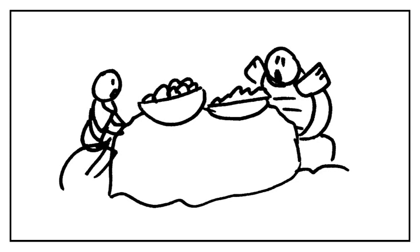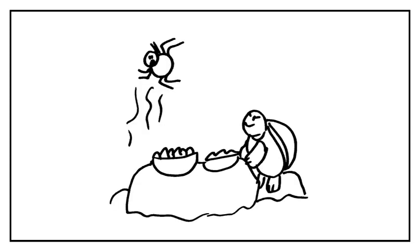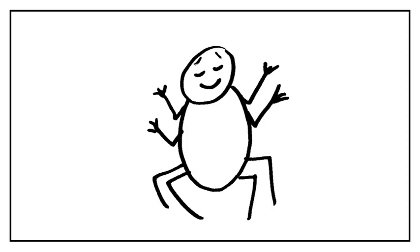Turtle reminded Anansi that it was bad manners to wear a jacket at the dinner table. Not wanting to be rude to his host, Anansi took off his coat and immediately found himself floating back to the water's surface. Anansi knew he had been outsmarted and headed home, and Turtle had a lovely dinner.